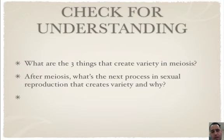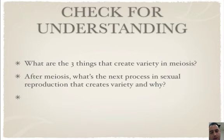Check for understanding: What are the three things that create variety in meiosis? They are crossing over, the Law of Independent Assortment, and the Law of Segregation. After meiosis, the next process in sexual reproduction that creates variety is fertilization.